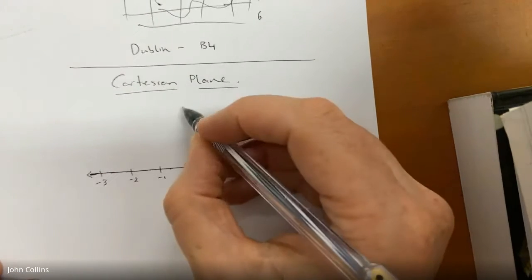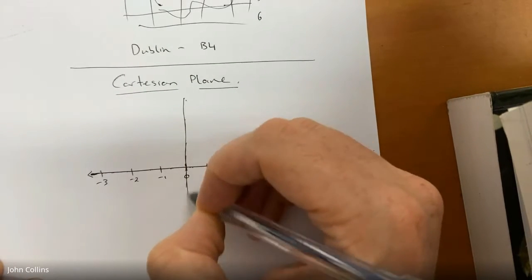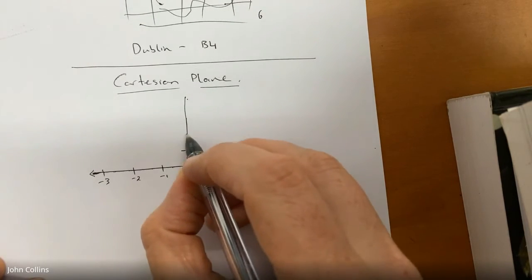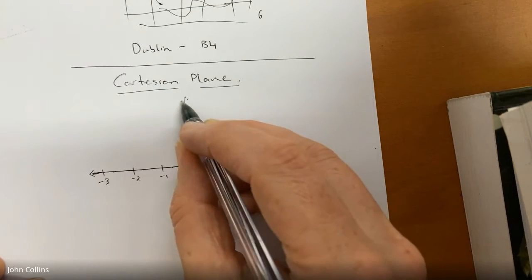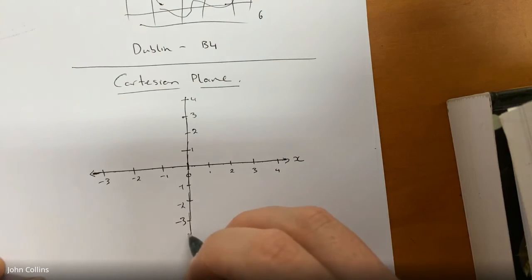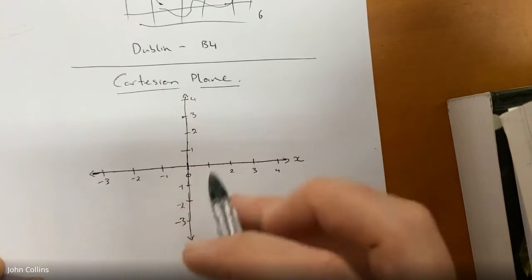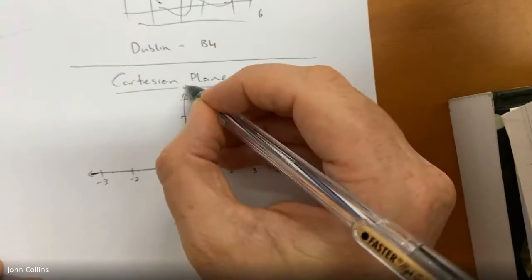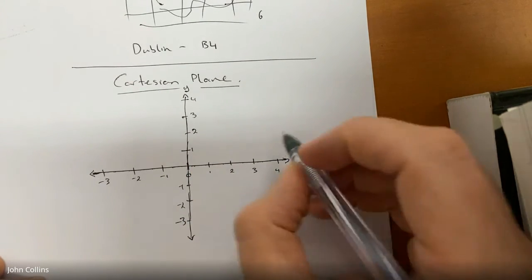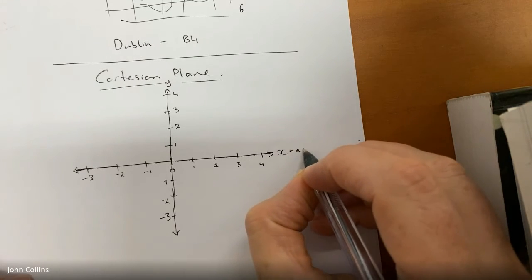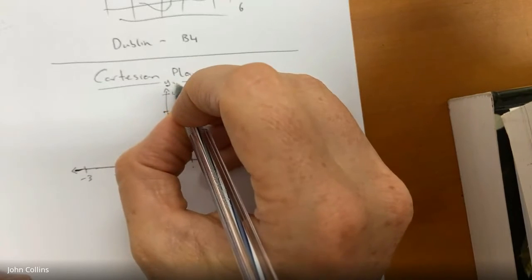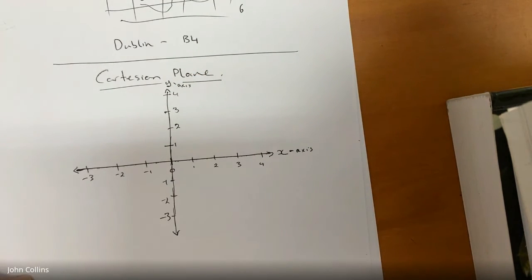And it also has a y number line, which goes up and down. So this one goes left and right, and this one goes up and down. It's 1, 2, 3, 4, minus 1, minus 2, minus 3. And it keeps going on. So the positive direction is up. It's called the y-axis. And that's called the x-axis. So x we usually put for short. That is the x-axis. And this is the y-axis.